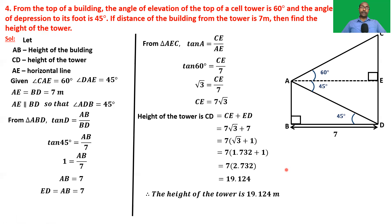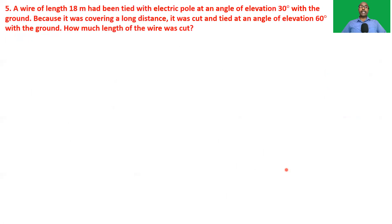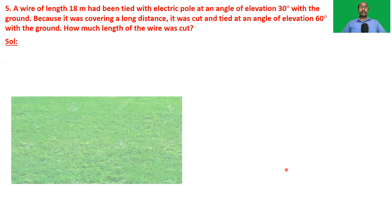The next problem is the fifth one: a wire of length 18 meters had been tied with an electric pole at an angle of 30 degrees with the ground. Because it was covering a long distance, it was cut and tied at an angle of elevation of 60 degrees with the ground. How much length of the wire was cut? This is the base — the ground.